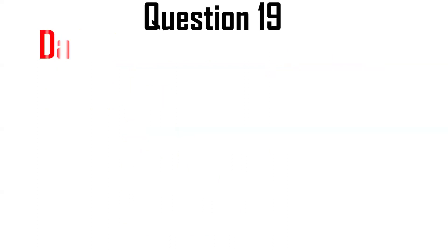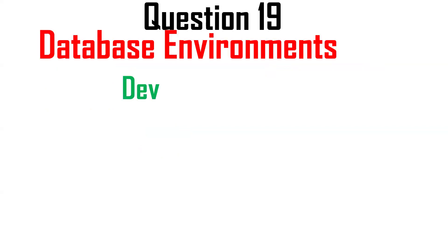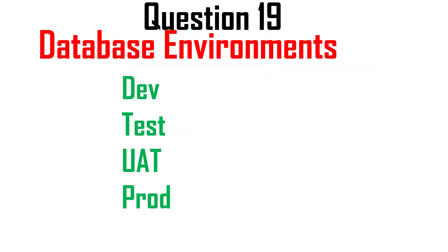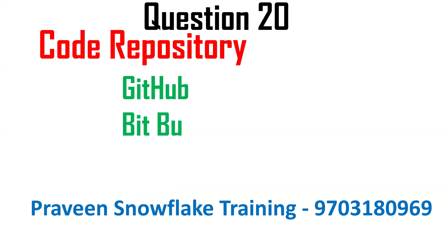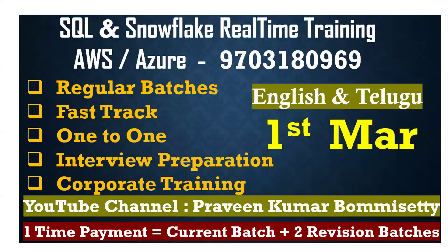Next question: database environments. The typical environments are Development, Testing, UAT (User Acceptance Testing), SIT (System Integration Testing), Sandbox, Pre-Prod, and Production. We work through these instances in order. Finally, code repositories: we maintain code in GitHub or Bitbucket. Some companies use their own tools, but GitHub and Bitbucket are most common. As a Snowflake developer, you should know all these things.